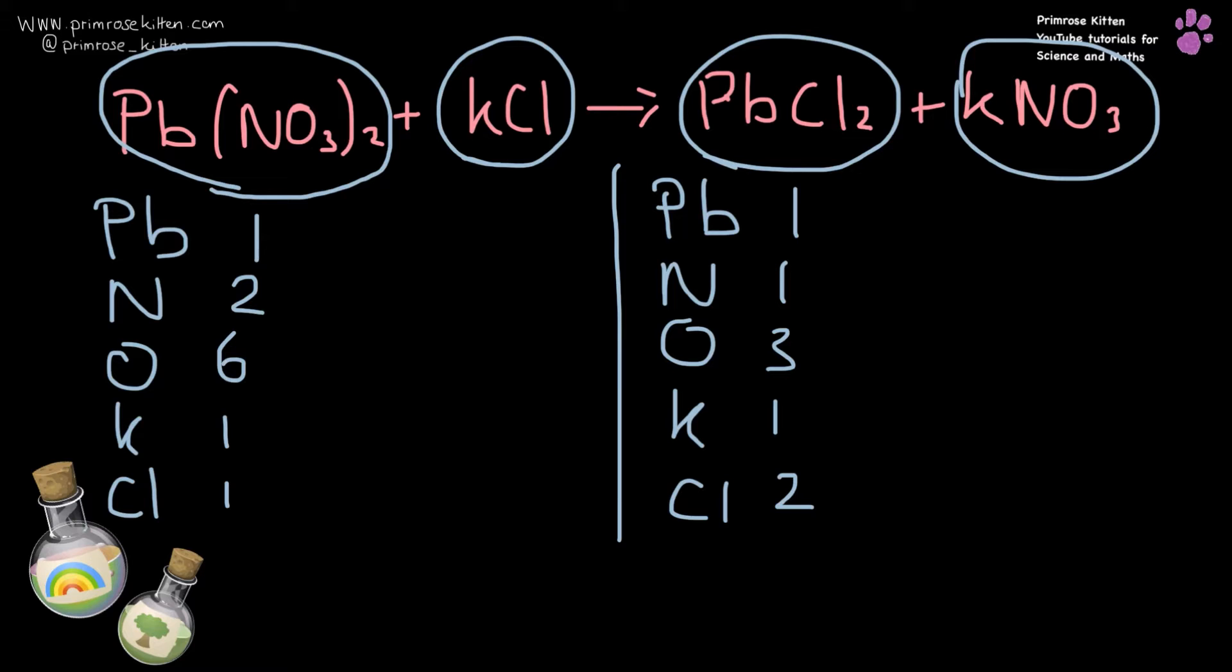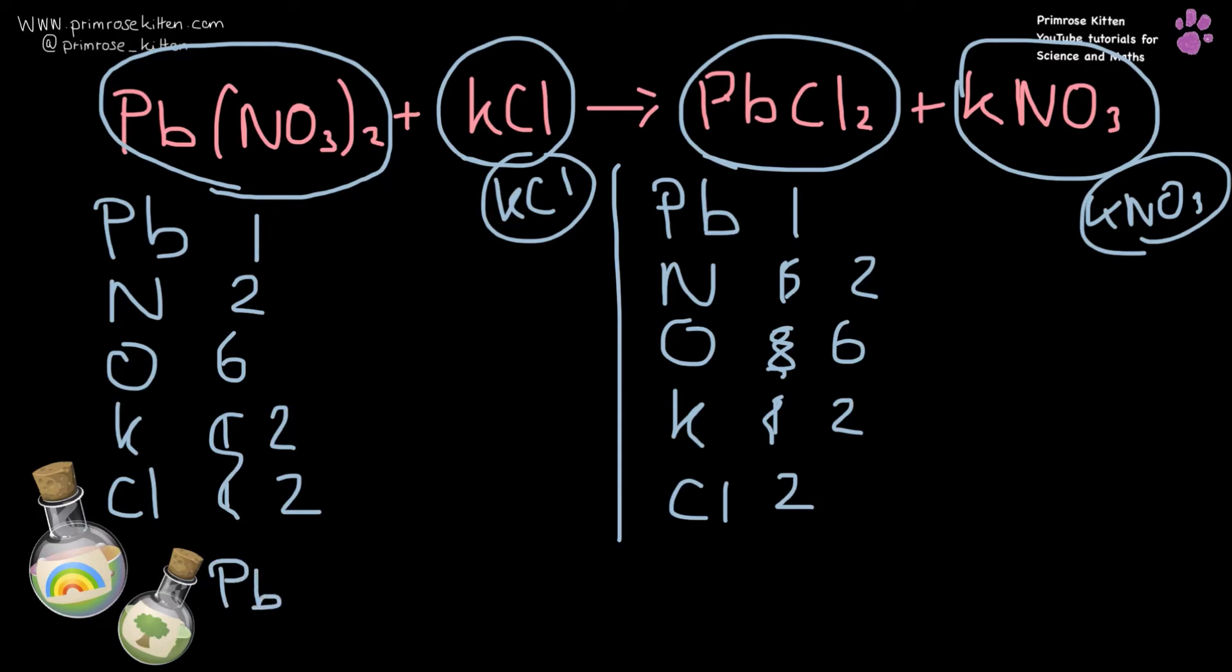Okay, so I need to add some more oxygen, so I can add another one of those on to there. So that is going to give me six, two, two. Okay, so we need to add some more KCl on. That is going to give me two and two. And then we need to write it out neatly to make the examiners happy.